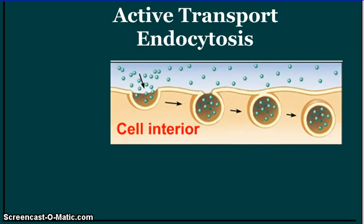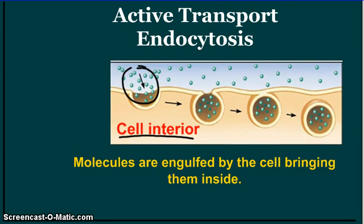Endocytosis is the opposite. The way I remember this: endo means endocytosis is moving endo — into — the cell. Exocytosis means out of the cell. In endocytosis, the molecules outside are engulfed by the cell and brought into the inside, forming a vesicle. Both endocytosis and exocytosis are active transport because it requires the cell to use energy to engulf the molecules or to push molecules outside of itself. Moving that vesicle around and fusing it with the cell membrane requires energy.